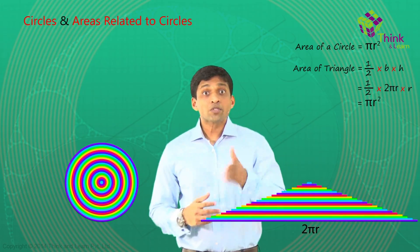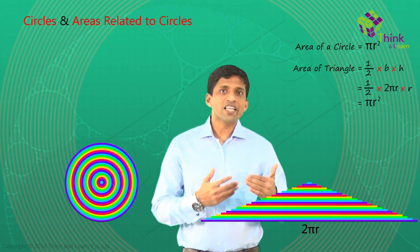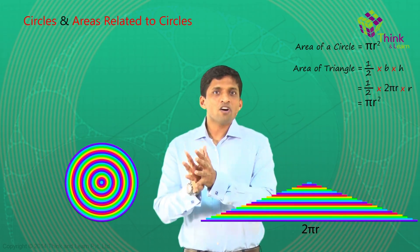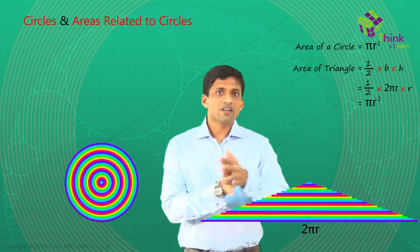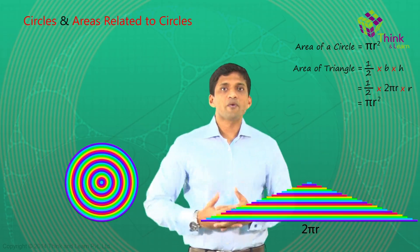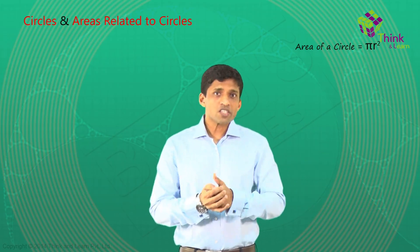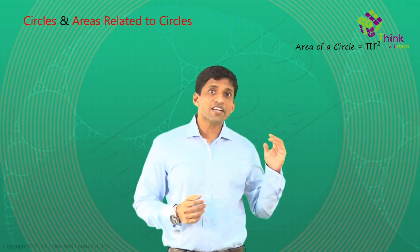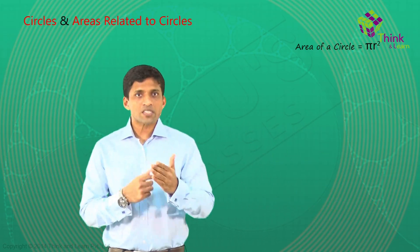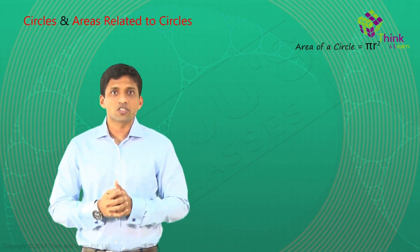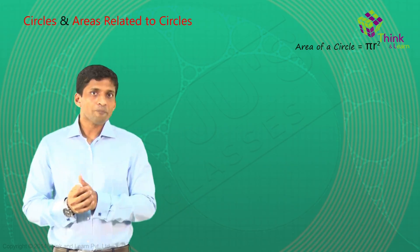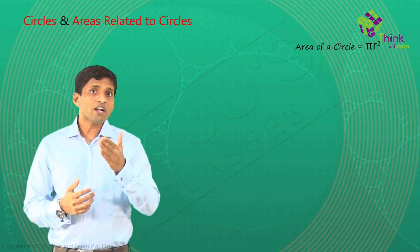I'm sure you have not seen area of a circle explained this way before. One more thing we can do is: area of a circle can be visualized using a rectangle also, like some of you must have seen in some books. So how can we do that?